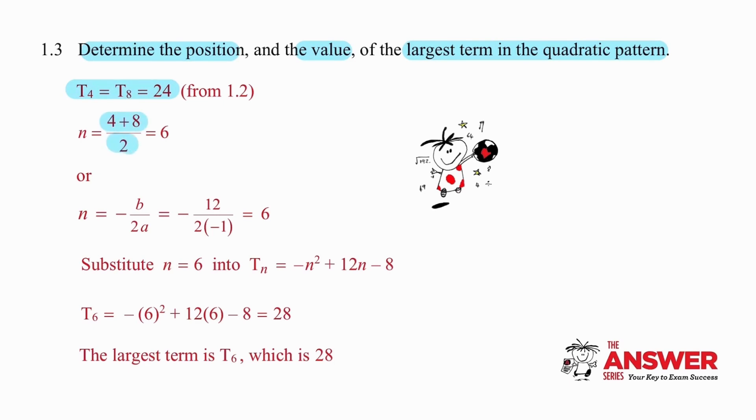We work out the 6 by simply taking the average of the positions of terms 4 and 8 or we use n is equal to minus b over 2a and that produces the value we are looking for that n is equal to 6. Substituting 6 into the formula we will end up with 28 and we will know that this is the largest term.